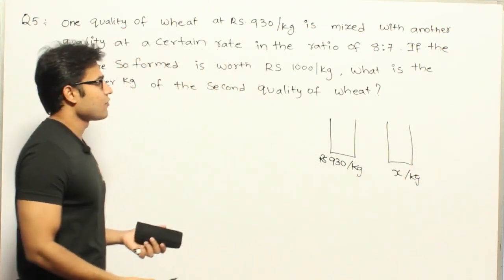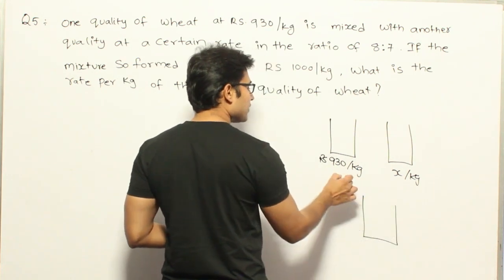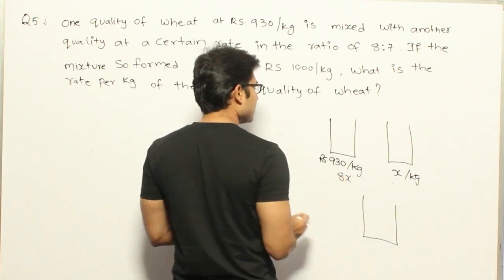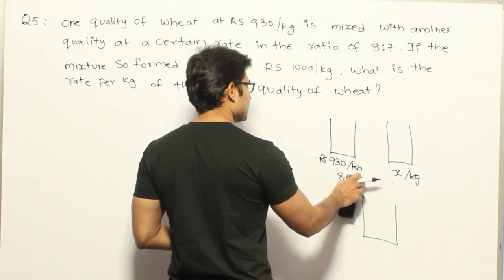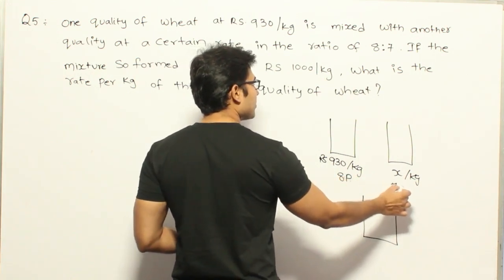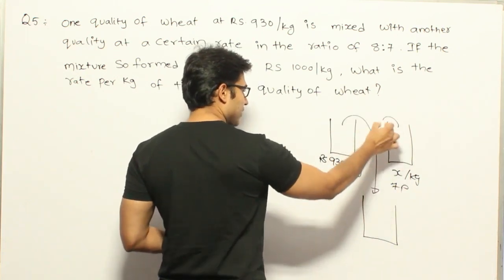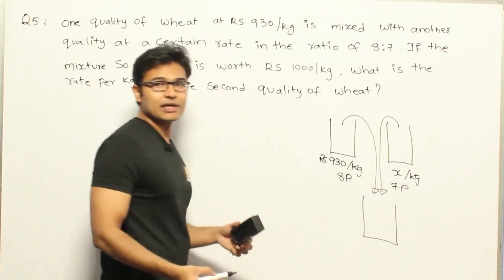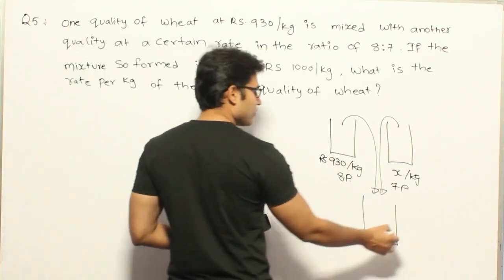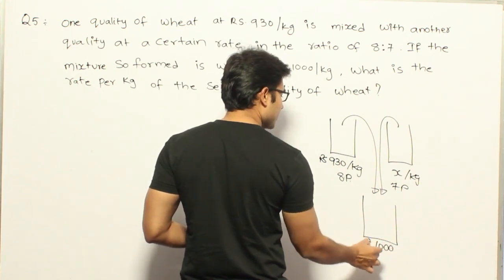So they are saying that they have taken two qualities of wheat. One quality of wheat is such that its cost is Rs. 930 per kg. And the other one they are not saying the price, so let's assume that the price of the other one is Rs. X per kg. And now they are saying that when we mix these two in the ratio of 8 is to 7, which means if I take 8 parts of this and then 7 parts of this and if I mix them both, then I am going to get a new quality of wheat.